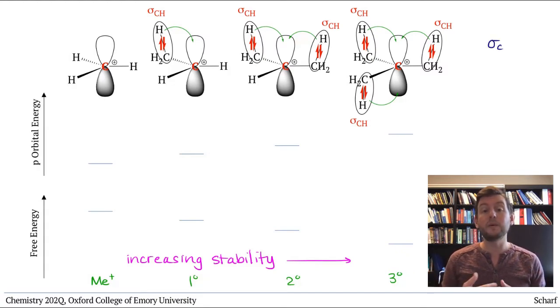Hyperconjugation can occur with any sigma bonds. It doesn't have to be CH bonds. CC bonds and other types of sigma bonds can do it too.